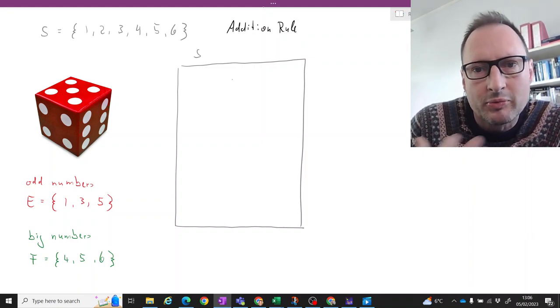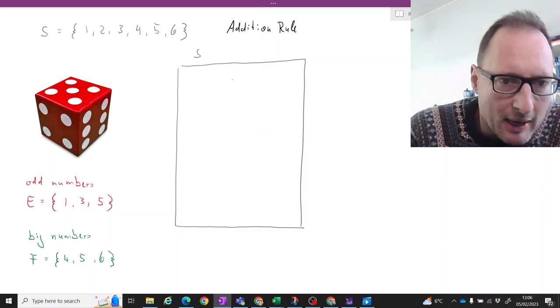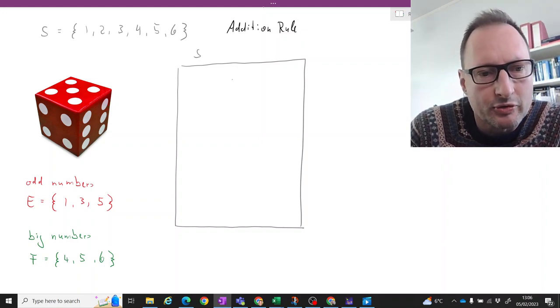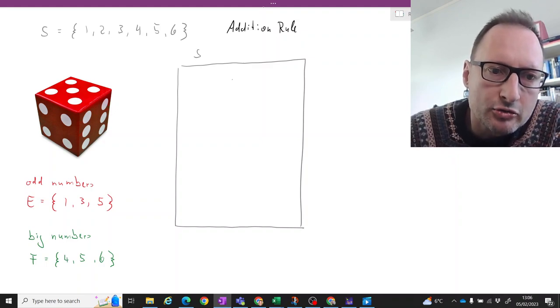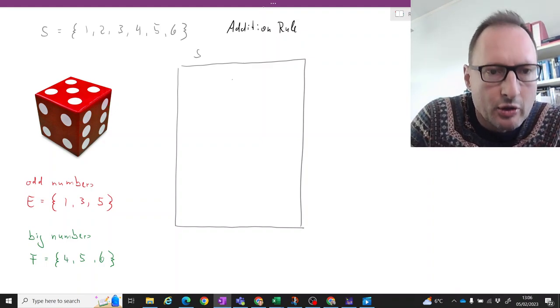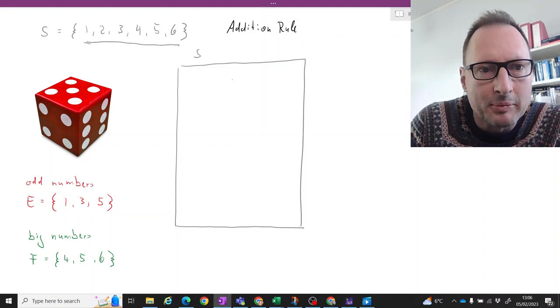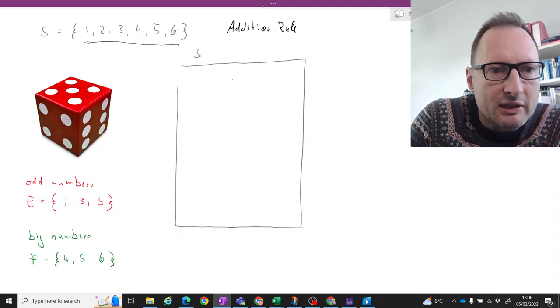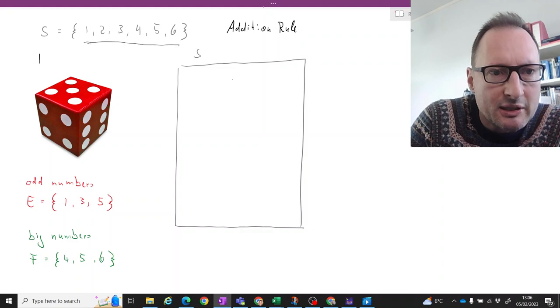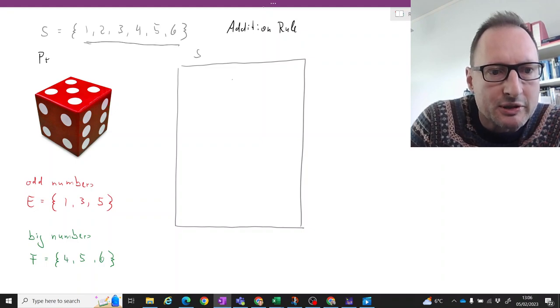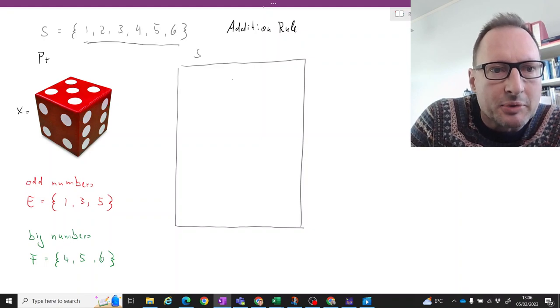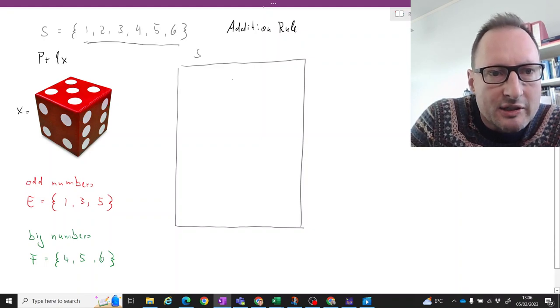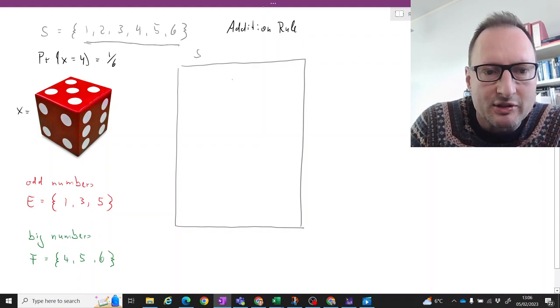We're working with almost the simplest example of random variables: the outcome of rolling a dice. We know it will be any of these six numbers and we know that each individual probability, for instance the probability of getting x equals 4, is of course 1 over 6 if it is a fair dice.